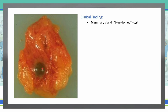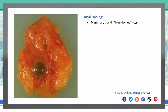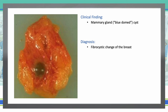Next, mammary gland blue dome cyst. This is a gross specimen showing a blue dome cyst, separated by dense connective tissue. These are cysts filled with dark fluid that stick out from the surrounding connective tissue. Fat appears yellow, fibrinous tissue appears white, and these non-proliferated fibrocystic changes appear blue. We see these in fibrocystic change of the breast — dilated cysts filled with fluid, fibrosis between the fat and cyst, ductal dilation.